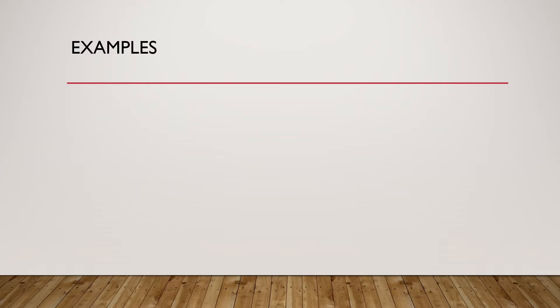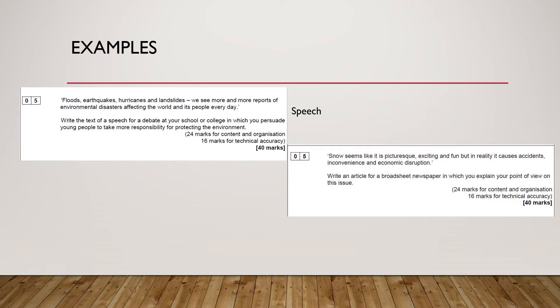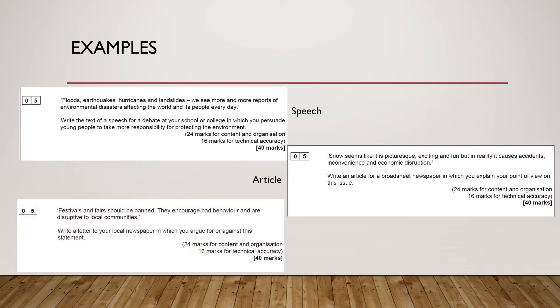Let's have a look at some examples of Question 5 from Paper 2. Normally you will be asked to write one of three different types of documents, however the structure of the questions remains the same. You could be asked to write either a speech, an article or a letter. A statement is given and it will be up to you to argue for or against that statement.